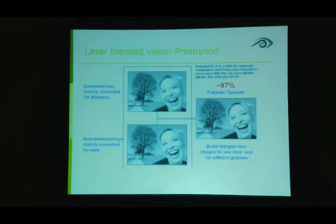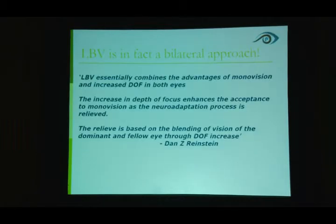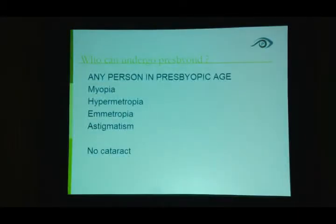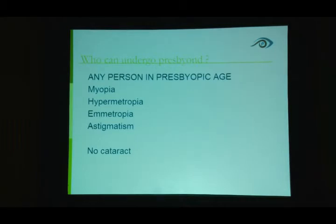Laser blended vision is a bilateral treatment — both eyes are treated, so binocular vision will always be sharper than monocular vision. Professor Dan Reinstein states that 97% of patients tolerate this treatment, based on neural summation. Patient selection: any presbyope with myopia up to 8–8.5 diopters depending on pachymetry, hypermetropia up to 4–5 diopters, emmetropes, and astigmatism up to 3.5–4 diopters — provided the patient has no cataract.